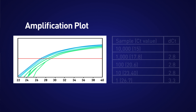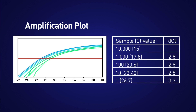Inhibition is worse in more concentrated samples, and so you can often see an improvement in the slope by diluting the sample. This is actually a good way to recognize when inhibitors are the problem. For example, if you made tenfold dilutions of your sample, the delta CT between each point should be about 3.3. When inhibitors are present, we see that the delta CT between our samples is about 2.8, but returns to 3.3 for the most dilute sample point.